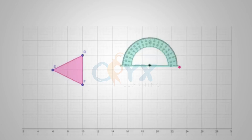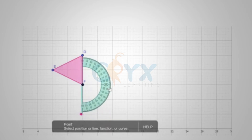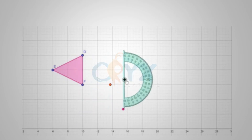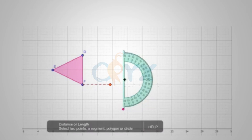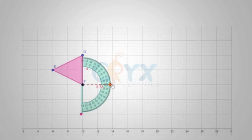Rotate triangle DEF 90 degrees clockwise around point F. In order to rotate triangle DEF 90 degrees clockwise, we can use our protractor and line up the edge of the protractor with side EF. From there, we can place another point 90 degrees out from point F. Because we're rotating around point F, point F will be the center of our protractor. Once I place this point, it's guaranteed to be in the right direction, 90 degrees, but not guaranteed to be the correct length.